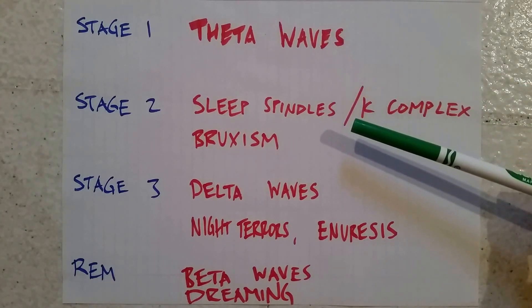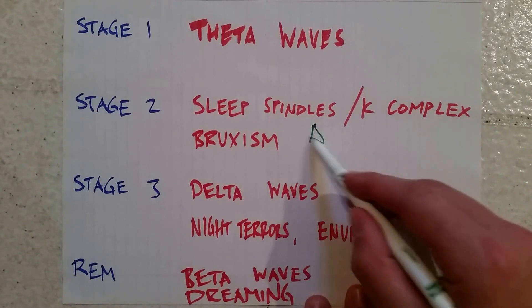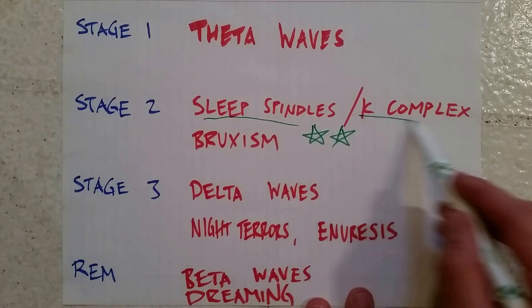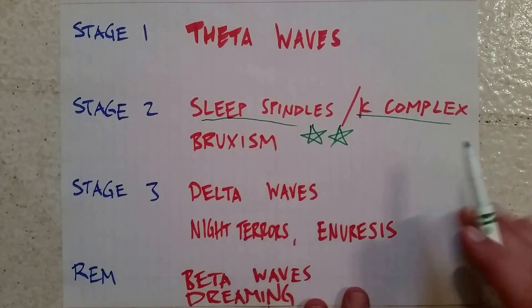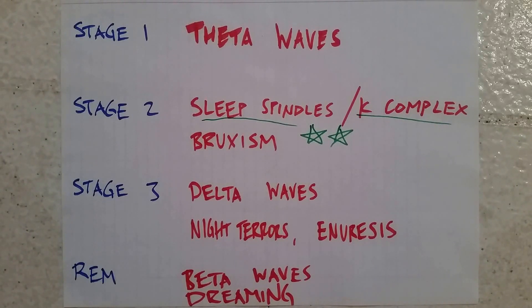The second stage is, in my opinion, the most heavily tested stage because of these buzzwords here. Rather than theta waves, the EEG waves develop into sleep spindles and K-complexes. Those are going to be some buzzwords you want to know. The other thing associated with stage two is bruxism, which is the grinding of teeth while you sleep.